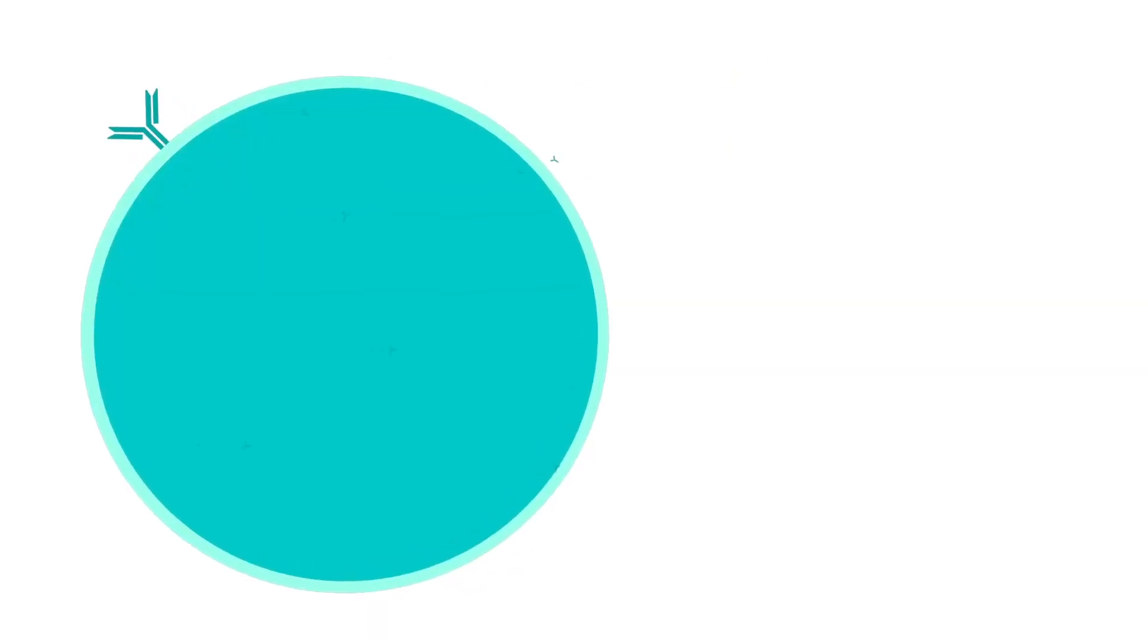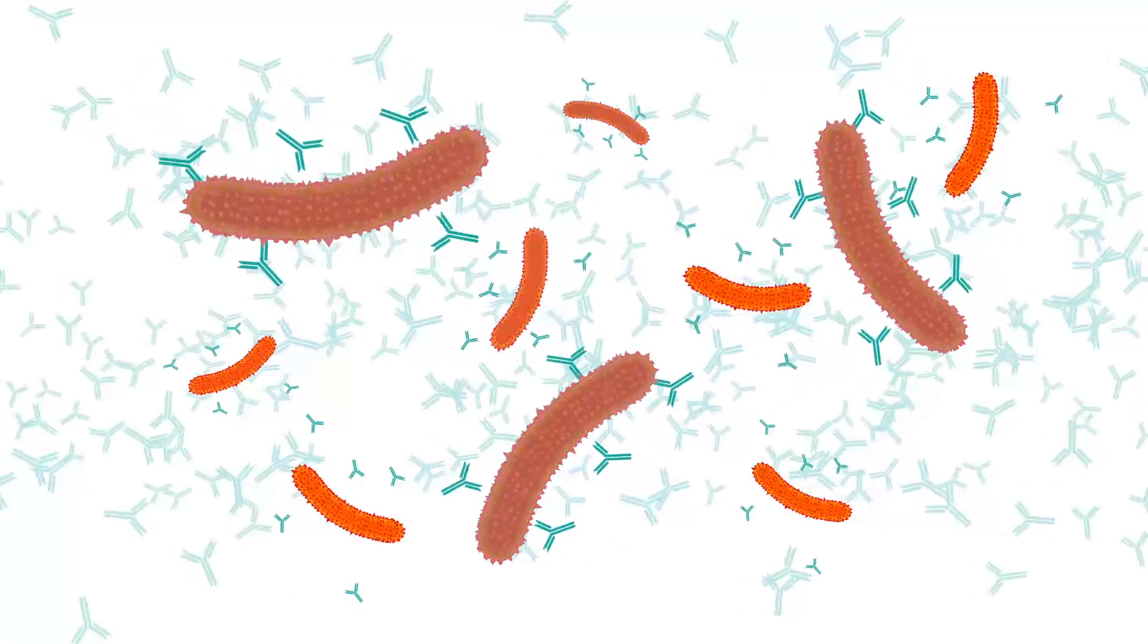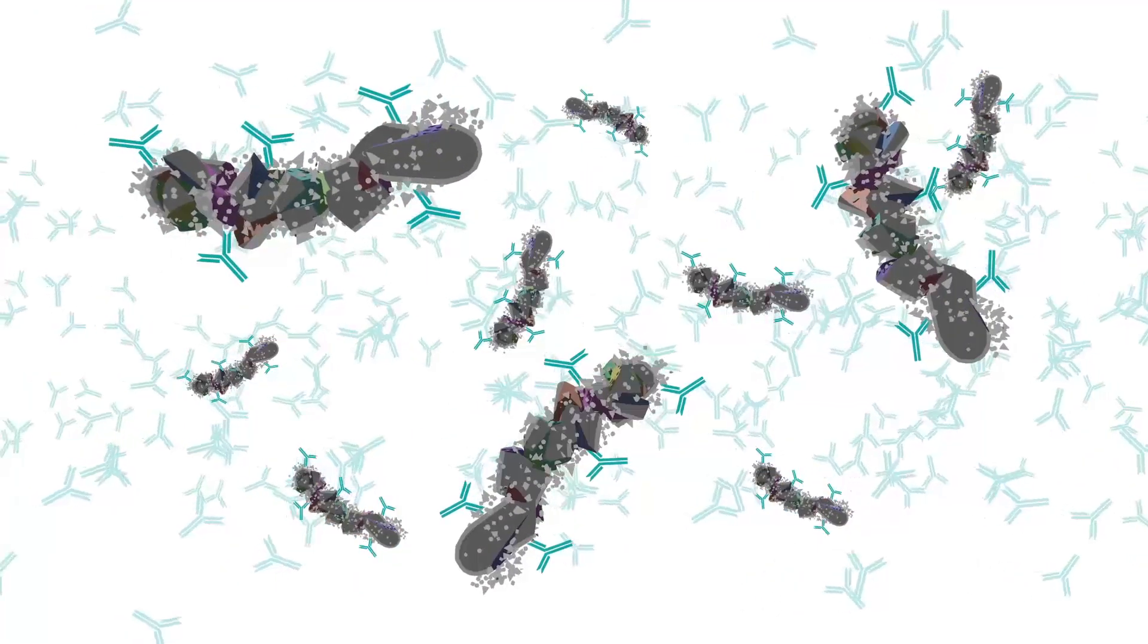Once the right cells are activated, they quickly divide and turn into a production line, making masses of antibodies that stick to the bacteria. Eventually, your body gets rid of all the bacteria, and you recover.